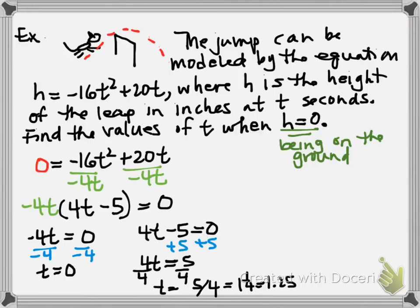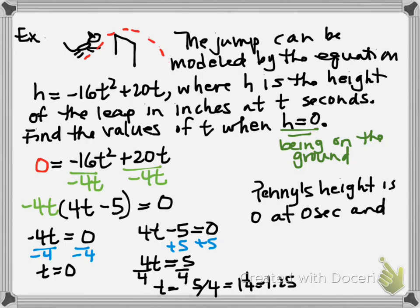So we would say Penny as our conclusion, let's see how we want to say on the ground. We say Penny's height is 0 at 0 seconds and 1.25 seconds. Now I kind of look at the first one as being a duh. Of course she's on the ground before she starts. That makes sense. So she hasn't even begun. She's on the ground. She's not levitating off the ground and then zooms over it. That's not how it works. She doesn't have a rocket ship listed on her. All right? So let's do one more of these.